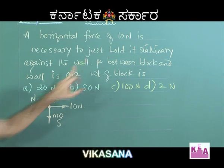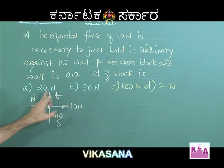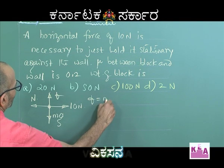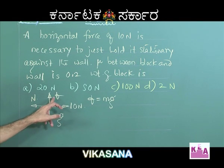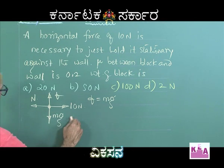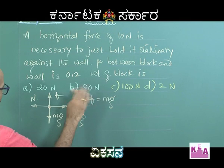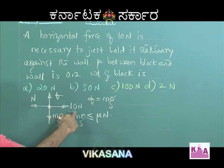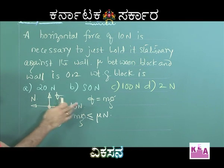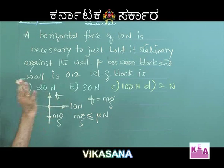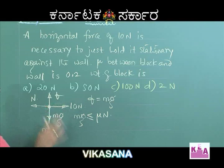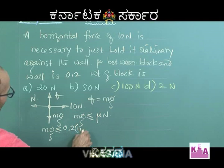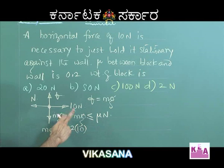Since you want the block to be stationary, the friction is static. Static friction must be exactly equal to mg for equilibrium, but it cannot exceed mu into N. Therefore mg must be less than or equal to mu times N. The normal reaction N equals 10 newtons because you pushed the block against the wall with 10 newtons. So mg must be less than or equal to 0.2 times 10, which is 2 newtons.